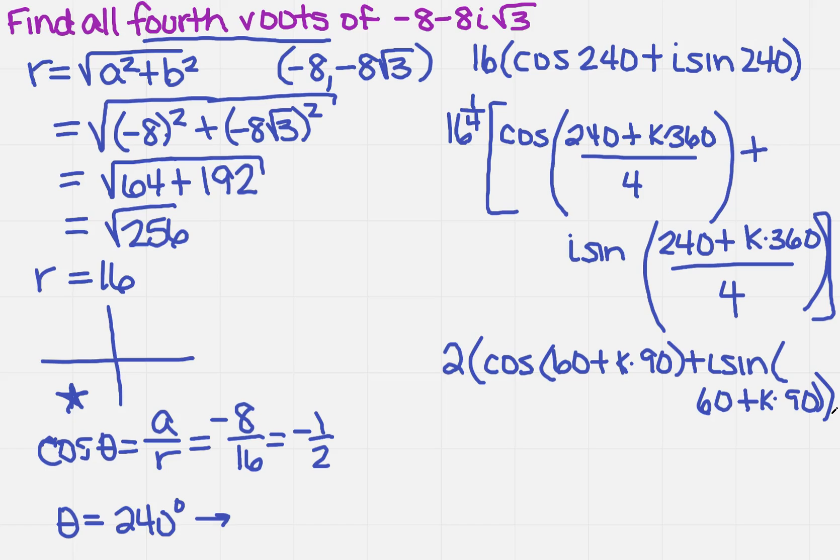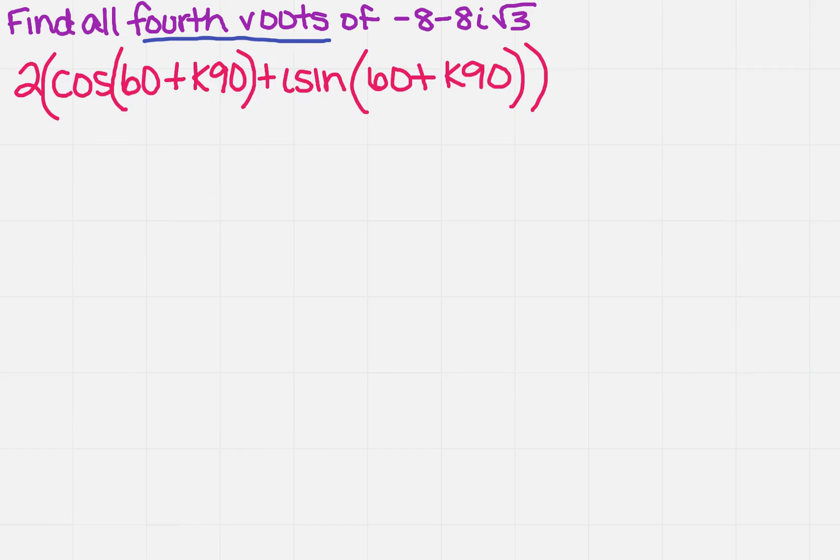So now this is written in terms of k. I'm going to actually have to use k values to solve it. This is the final formula that we came up with that we need to use to find all of our fourth roots. So when we do this, we need four roots. So remember, we're going to do 4 minus 1, which is 3.